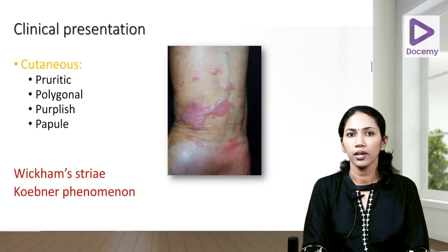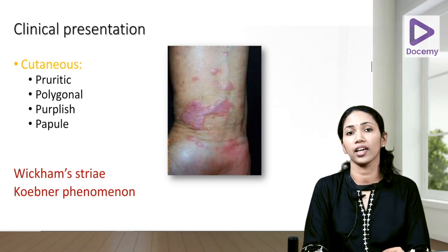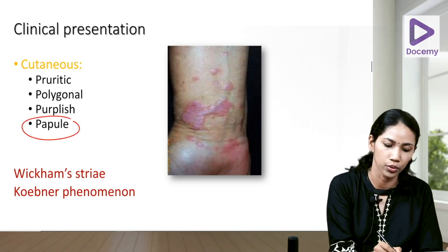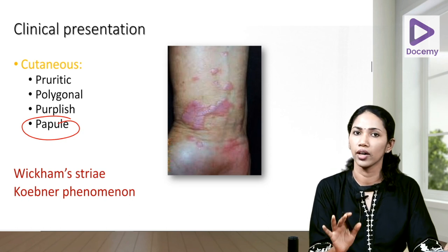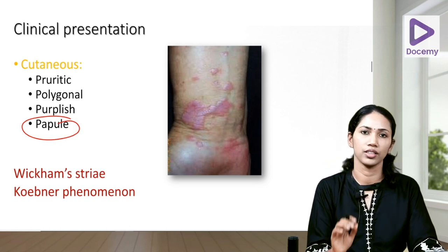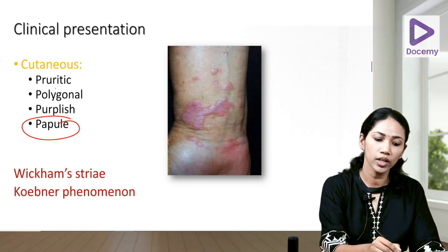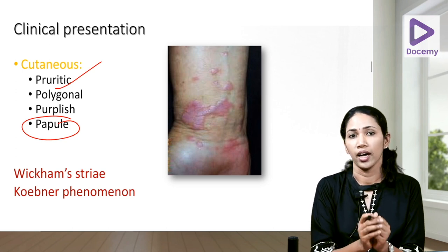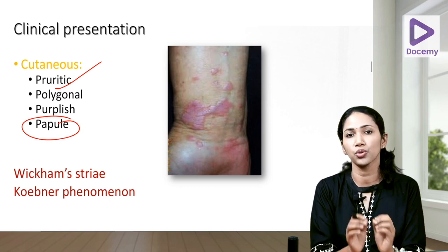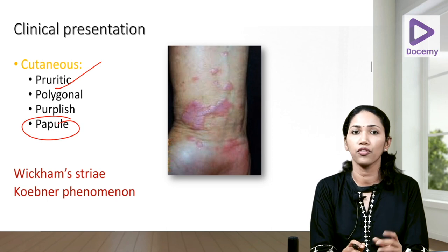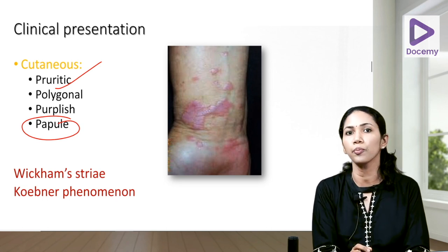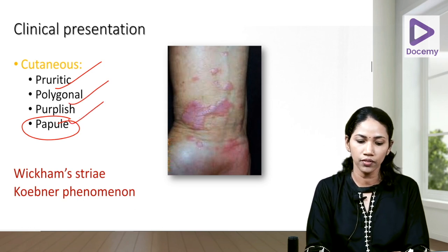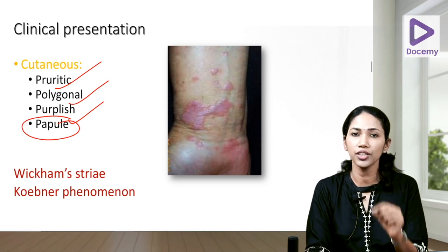The clinical features of lichen planus can be remembered using the P's. The lesion is a papular lesion — a raised lesion. It is pruritic, meaning the patient will complain of intense pruritus. The lesions are polygonal and purplish — you can appreciate a violaceous color to the lesion, even in darker skin tones.